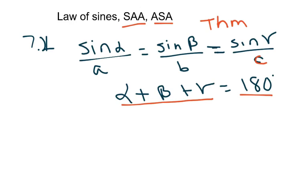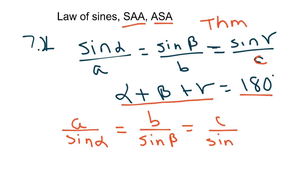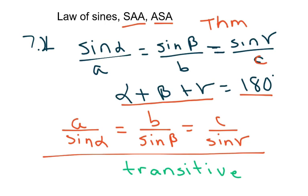Okay, and this property, you can also write this as A over sine of alpha if you want. You'll see it both ways, depending on where you look. This is called the transitive property when you have something like this. So I don't have to use all three. I can use this with this, or I can use the B with the C part, or I can use the A with the C part. So this is called the transitive property.